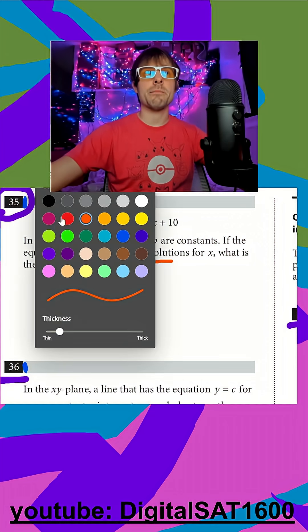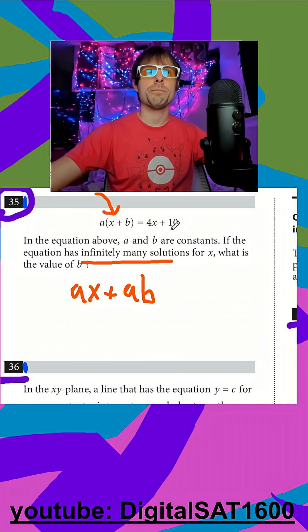And because it's infinitely many, I know that my slope and my y-intercept are equal. So I know that my 4 is my slope of my other line, my a is my slope of this line, so I already know a is equal to 4.